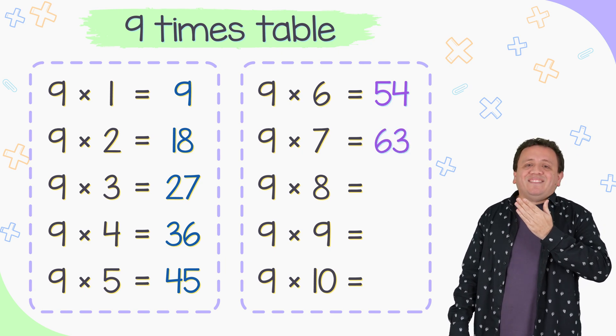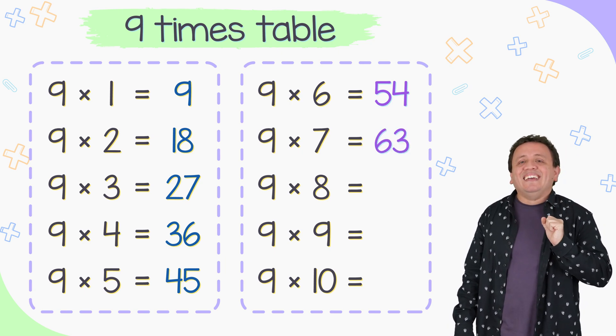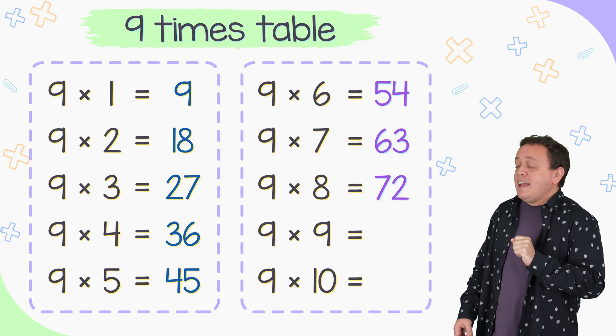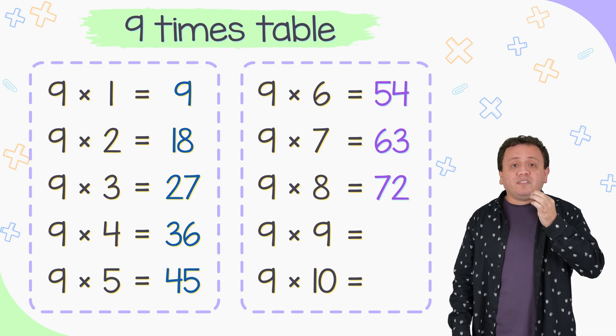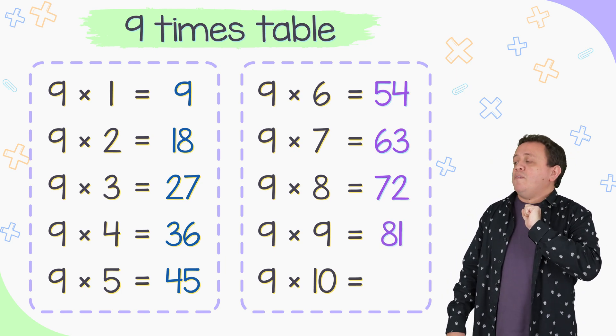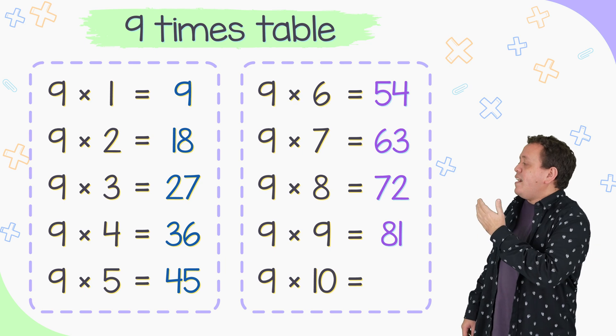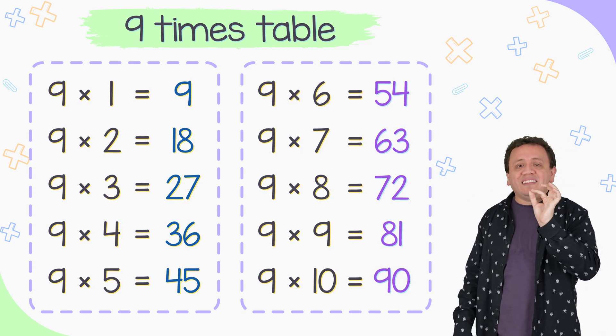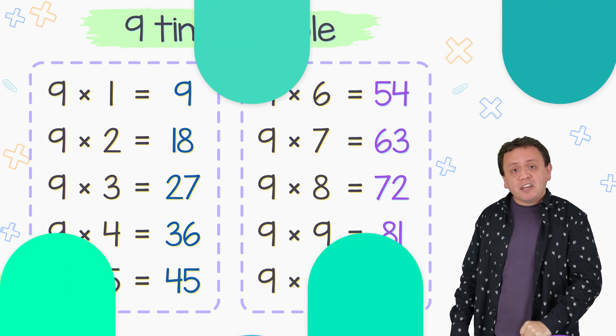9 times 8 equals 72. 9 times 9 is 81. Finally, 9 times 10 equals 90!